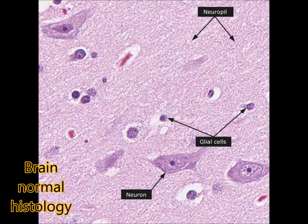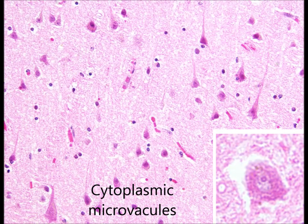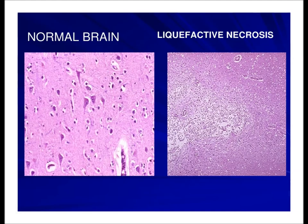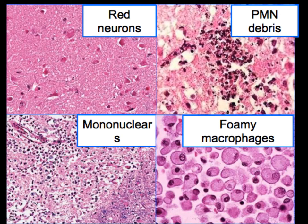Microscopically, this is the normal brain histology showing glial cells, neurons, and neuropil. The first morphological changes are the cytoplasmic micro vacuoles, and then the red neurons with marked eosinophilia and nuclear pycnosis. There is loss of architecture and disintegration of cells.